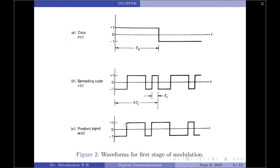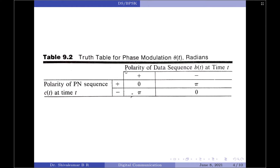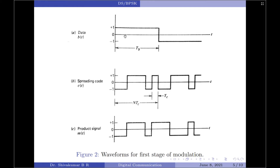The product signal, which is the direct sequence spread spectrum signal represented by m(t), is obtained by multiplying the data sequence b(t) with the spreading code c(t). When both b(t) and c(t) are positive, the product signal is also positive. When both b(t) and c(t) are negative, the product signal is once again positive. And lastly, when either b(t) or c(t) is positive and the other one is negative, the product signal m(t) will be negative. That is how you obtain a direct sequence spread spectrum signal, which is the output of the first stage of modulation.